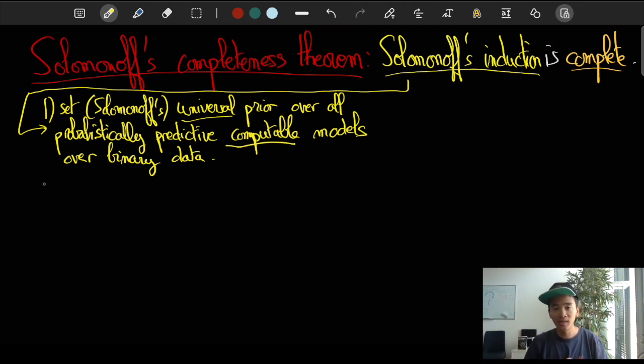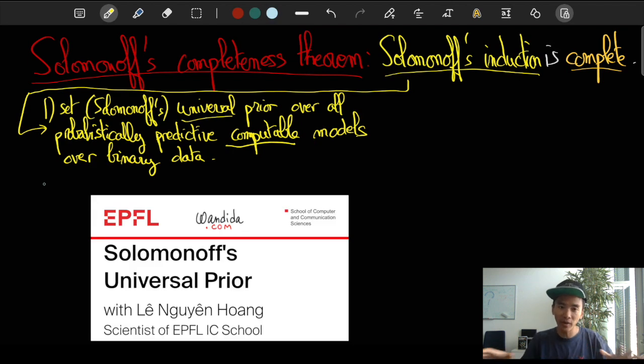And the way we're going to do this is by setting up a prior probability distribution on all computable probabilistic prediction theories, and this prior can be defined using a universal Turing machine as we did it in a previous video.